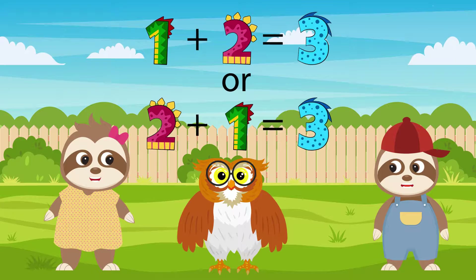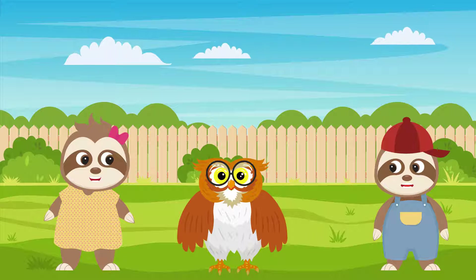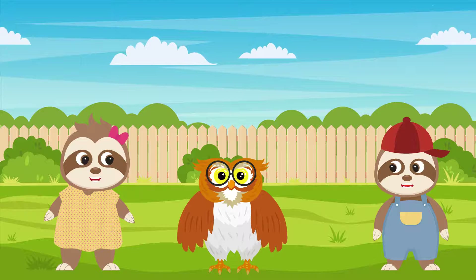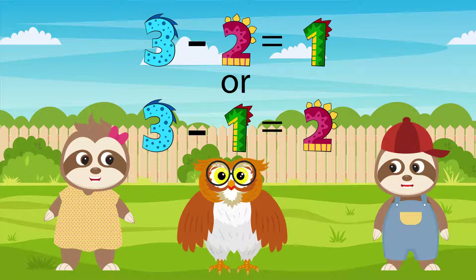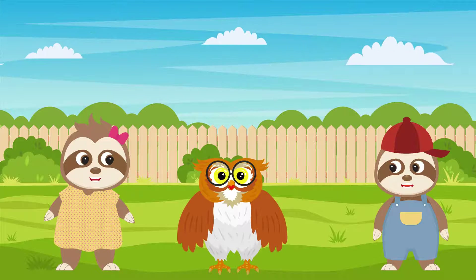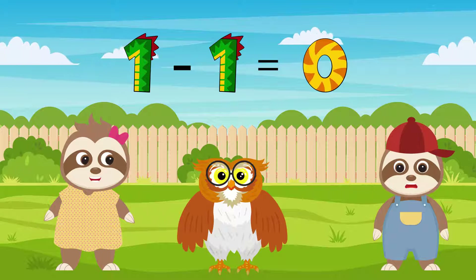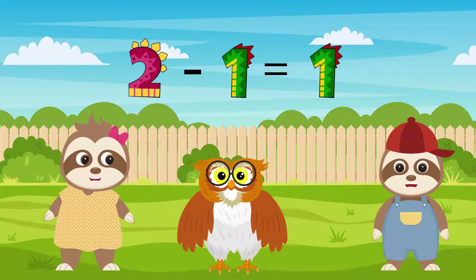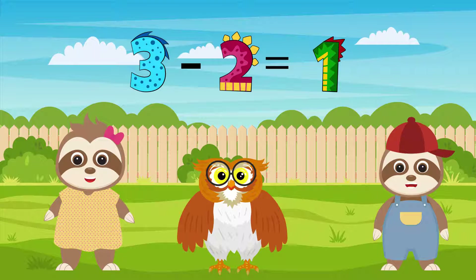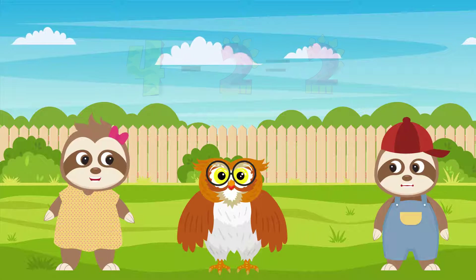Or 2 plus 1 equals 3. But did you know that we can also get rid of or subtract these same numbers? Such as 3 minus 2 equals 1, or 3 minus 1 equals 2. So now let's continue our song with numbers. 1 minus 1 equals what? 0. 2 minus 1 equals what? 1. 3 minus 2 equals what? 1. 4 minus 2 equals what? 2. Splendid!